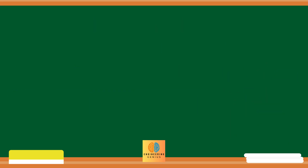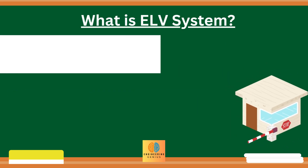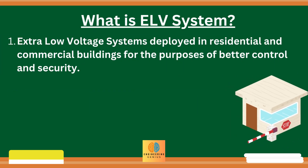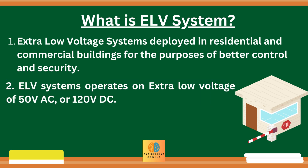First of all, we will know what is ELV system. ELV system for buildings stands for extra low voltage system, deployed in residential and commercial buildings for the purposes of better control and security. ELV systems operate on extra low voltage of 50 volts AC or 120 volts DC.